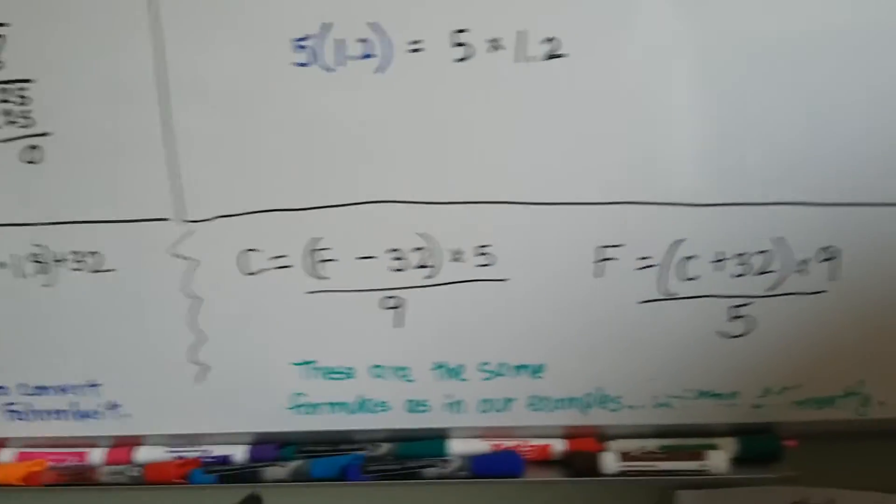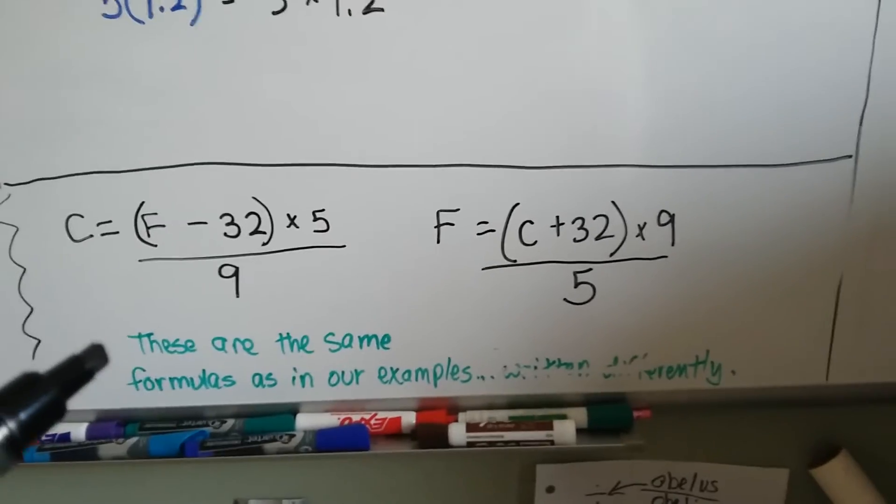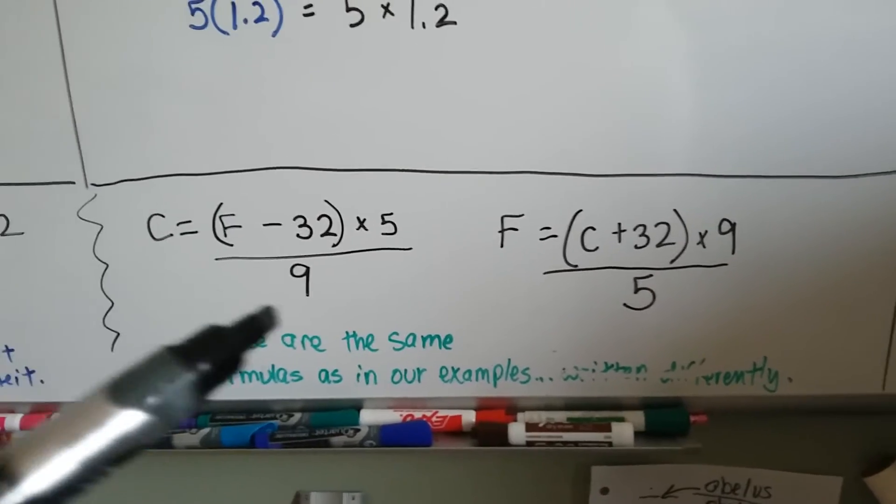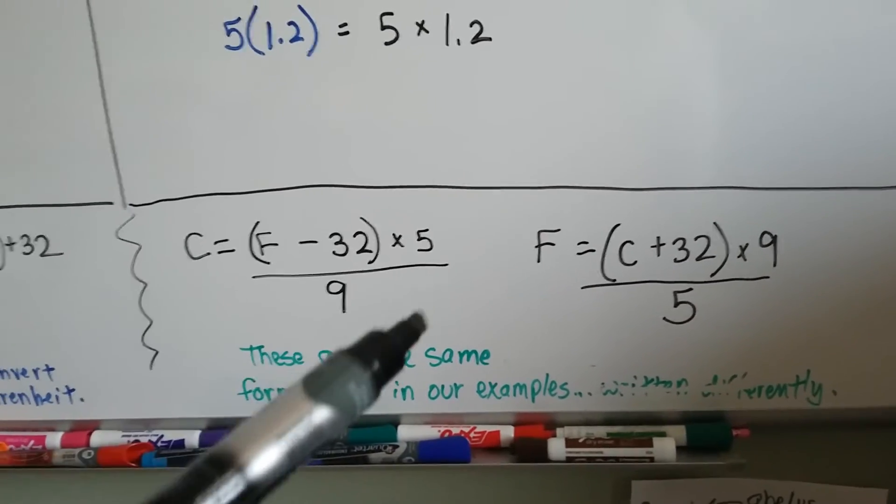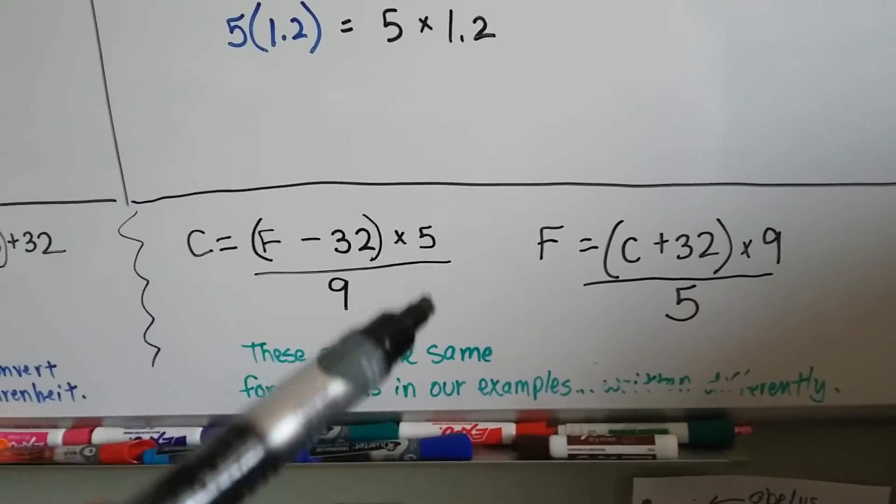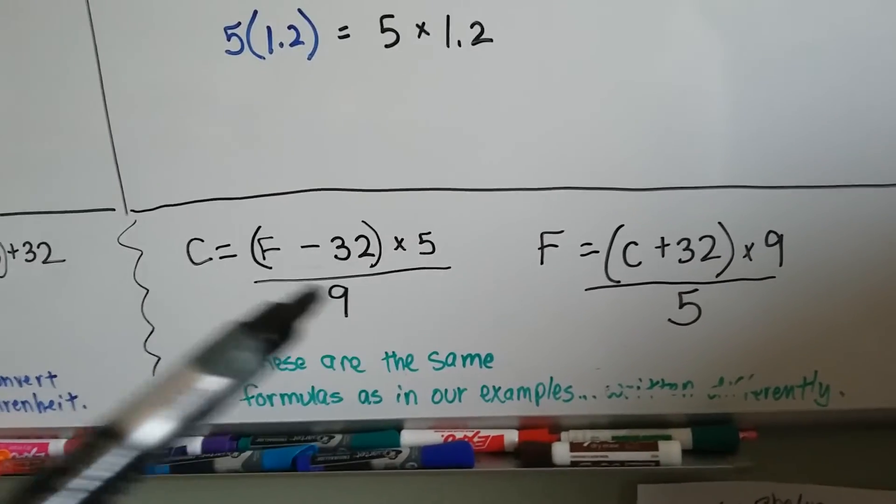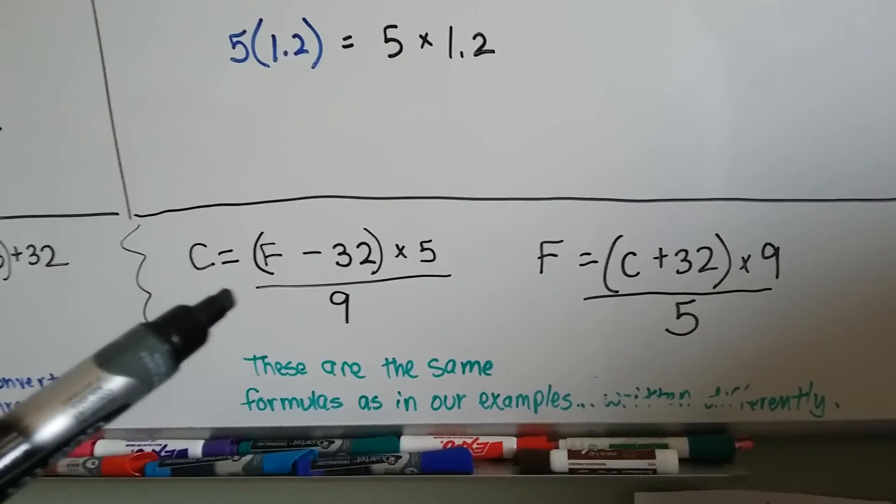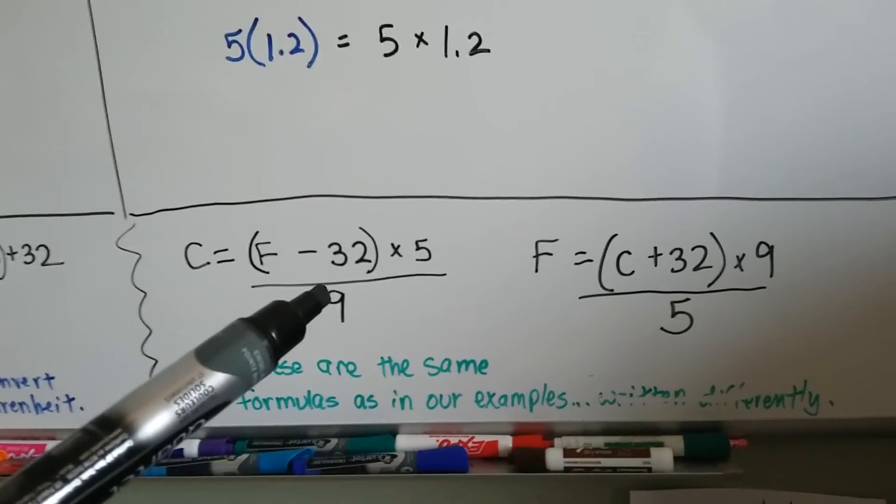I also found it written like this. And this is basically the same one that we used, it's just written differently. Instead of the 5 ninths being over each other as a fraction over here, they put the whole thing over the 9. But it's the same formula that we used.